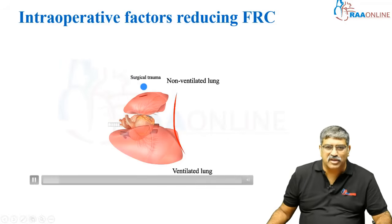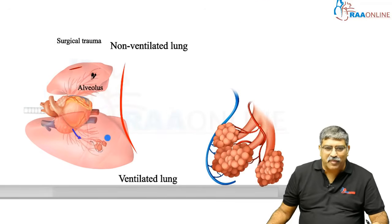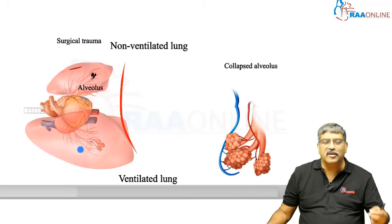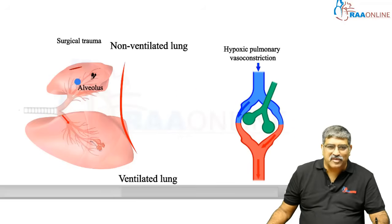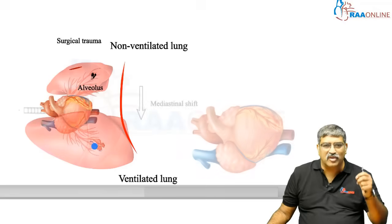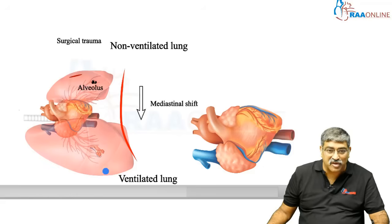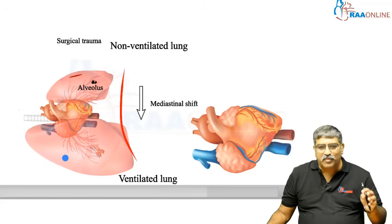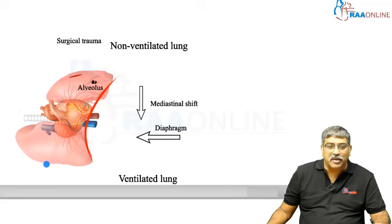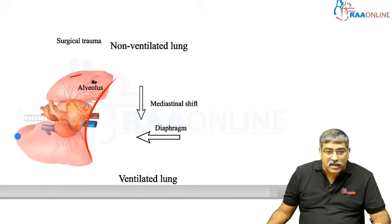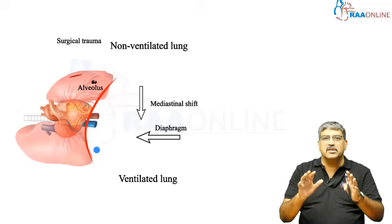What are the various factors which reduce the FRC? Surgical trauma reduces the FRC. During one-lung ventilation, the dependent part develops collapsed alveoli which also reduces FRC. Third, hypoxia and pulmonary vasoconstriction divert blood towards the dependent lung, also reducing FRC. The non-dependent lung pushes the mediastinum, causing a mediastinal shift which reduces FRC. Another important factor is suboptimal positioning — when you paralyze, the diaphragm pushes the dependent lung more than the non-dependent lung, reducing FRC.